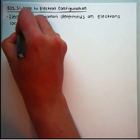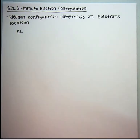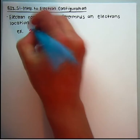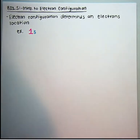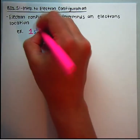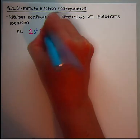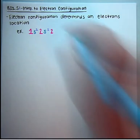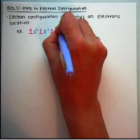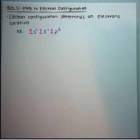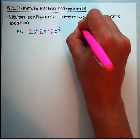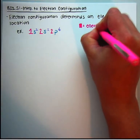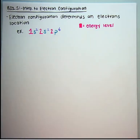So what an electron configuration looks like — let's say the electron configuration was 1s2, 2s2, 2p4. Each color is going to represent something different. The numbers in pink tell you which energy level the electron is going to be in.